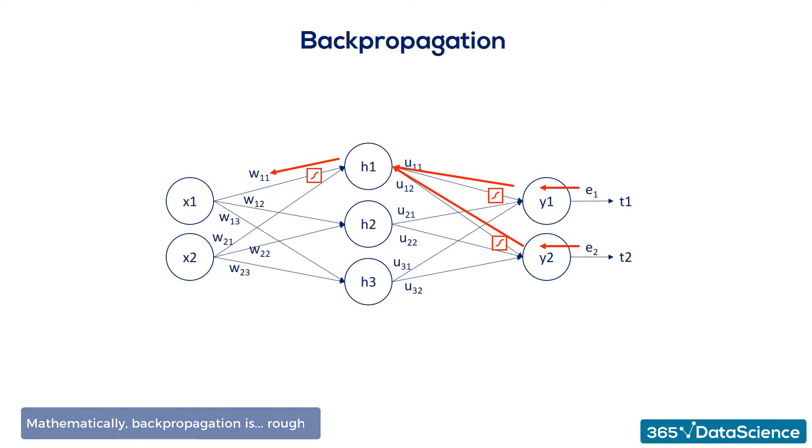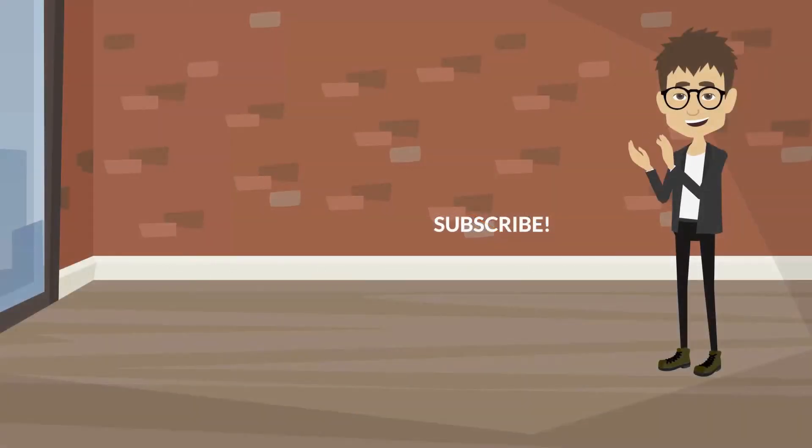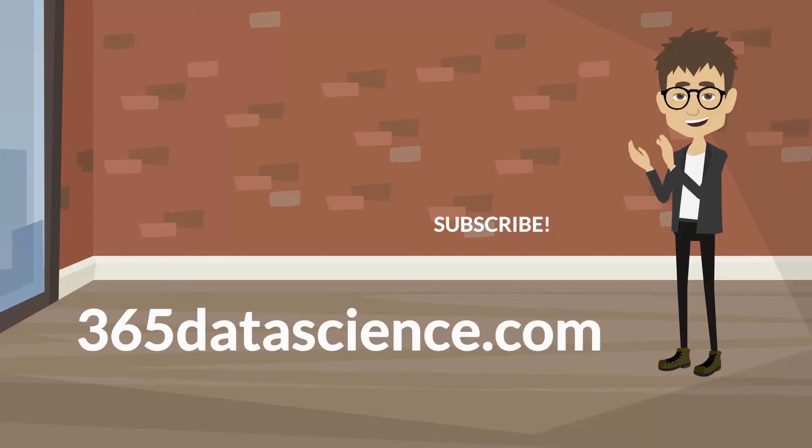That is why back-propagation is one of the biggest challenges for the speed of an algorithm. For more videos like this one, please subscribe.